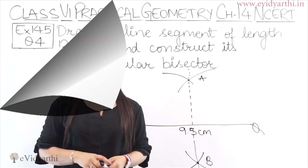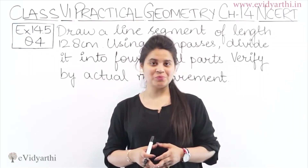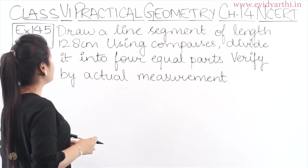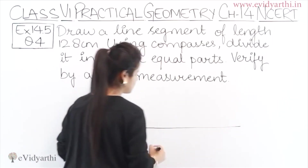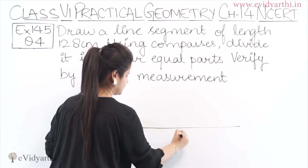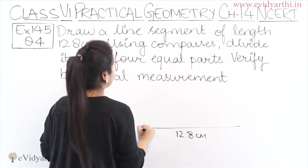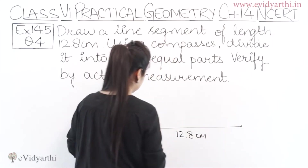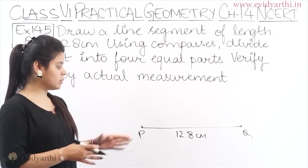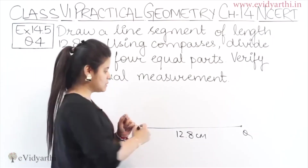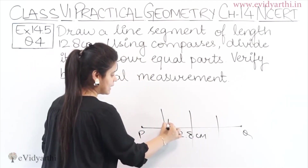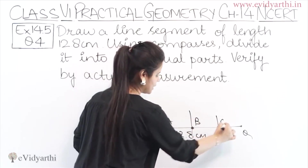Now we are starting with question number 4 of Exercise 14.5. In this question, we have drawn a line segment of length 12.8 cm — we can call it PQ. Using compasses, divide it into four equal parts. If we mark the division points A, B, and C, then PA should equal AB, BC, and CQ — four equal parts. Verify by actual measurement using a ruler.